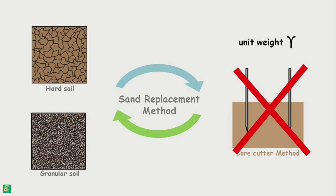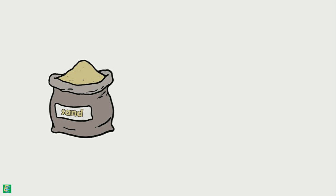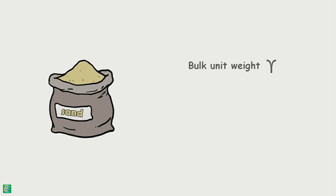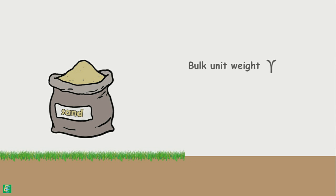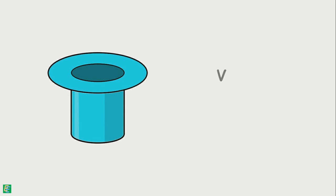For this test, we will need a calibrating sand which passes through a 1 mm IS sieve and is retained on a 600 micron IS sieve. First, we will determine the bulk unit weight of this sand, and then using that we will determine the bulk unit weight of the soil sample taken from the field. We take a calibrating container and determine its volume by taking its measurements and doing some simple calculations.